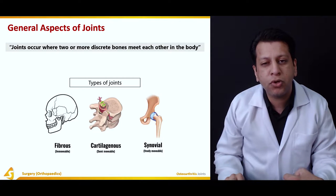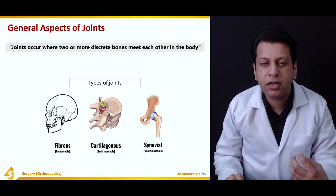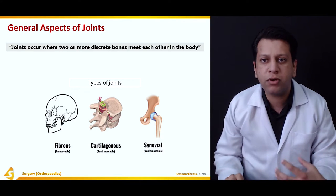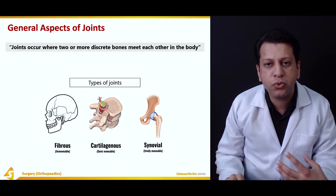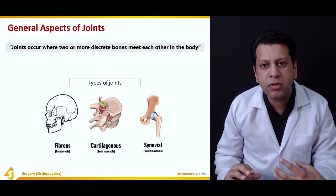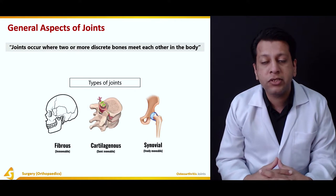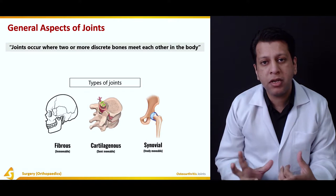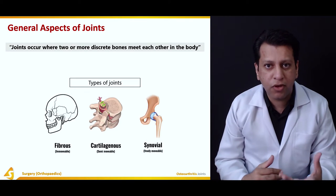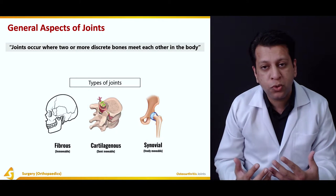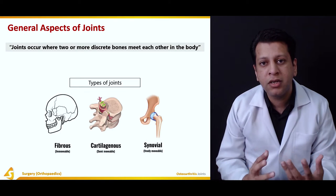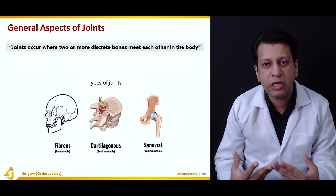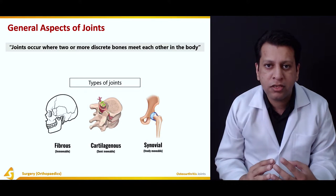Joints occur where two or more discrete bones meet. Broadly they are categorized into three types: fibrous, cartilaginous, and synovial — and also fibrocartilaginous joints, which are a mixture. Fibrous joints are highly immobile, allowing very little movement. Cartilaginous or fibrocartilaginous joints allow some degree of movement in all planes or free movement in one plane but less in another. For example, the spine is a fibrocartilaginous joint with high flexion and extension but very little rotary movement. Skull bones are joined by fibrous joints and are almost immobile.